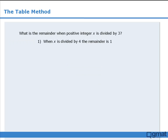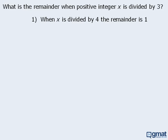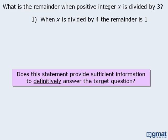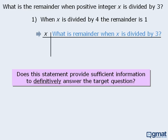Let's try another example. In this question, we must determine the remainder when x is divided by 3. Statement 1 tells us that when x is divided by 4, the remainder is 1. We'll use a table to organize our results. First we'll choose some values for x that satisfy the condition in statement 1 — that when x is divided by 4, the remainder is 1. Then, using these values for x, we'll ask our target question: what is the remainder when x is divided by 3?